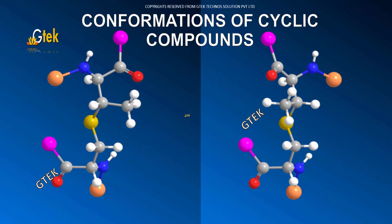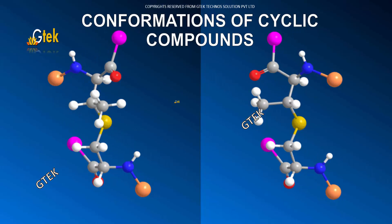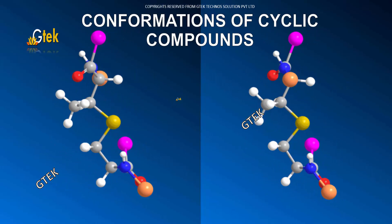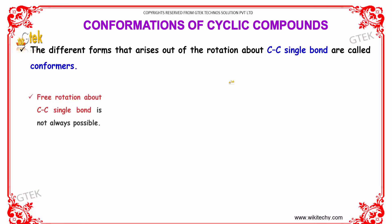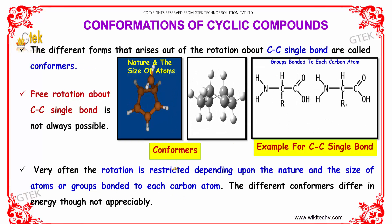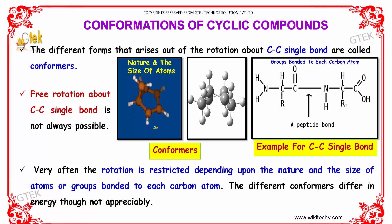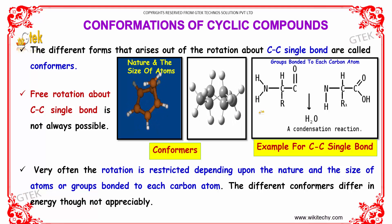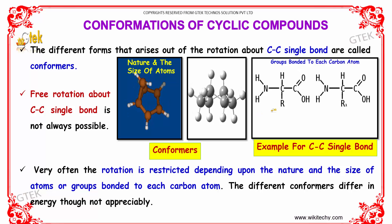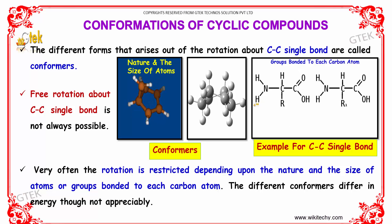Welcome to GTEC Technosolutions Private Limited. In this unit, we'll discuss about the conformations of cyclic compounds. The different forms that arise out of the rotation about C single bond C are called conformers. The free rotation about C single bond C is not always possible, and is mostly not possible when they form a cyclic compound.